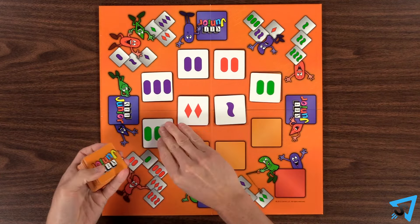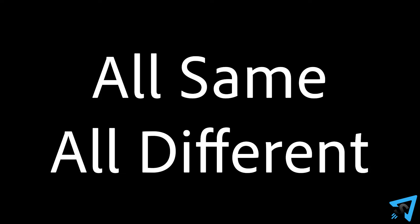There are no turns. All play happens simultaneously. When you see a set amongst the face up tiles, you call it out. A set is three tiles that are either all the same or all different in each individual feature.